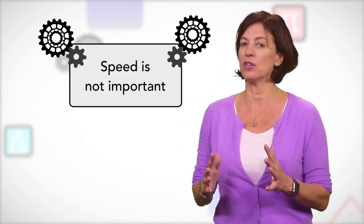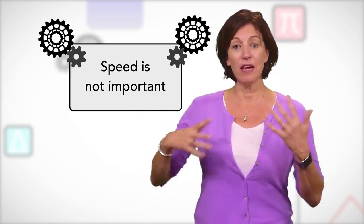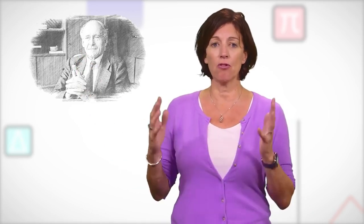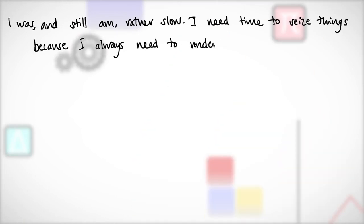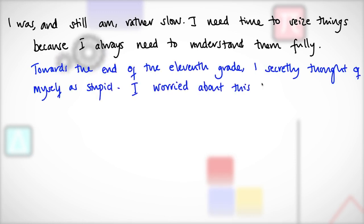Our next message is that speed is not important in maths. You don't need to be fast to be good at maths. In fact, it may be better to be slow with maths. Some of the best mathematical thinkers in the world are really slow. Laurent Schwartz, a mathematician, wrote about feeling stupid in school because he was the slowest mathematical thinker. He went on to become a world-leading mathematician and he won the Fields Medal, the greatest prize in mathematics. This is a quote from his autobiography. I was and still am rather slow. I need time to seize things because I always need to understand them fully. Towards the end of the 11th grade, I secretly thought of myself as stupid. I worried about this for a long time. He goes on to say that he later realized something critical. That speed isn't important in math. What is important is to deeply understand mathematical ideas and connections. Whether you're fast or slow isn't really relevant.